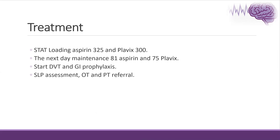The treatment, as mentioned, in case of minor stroke or transient ischemic attack, we give loading aspirin and Plavix, maintaining both for three weeks or 21 days, then single antiplatelet according to the underlying etiology. If the underlying etiology is thromboembolic, we will start anticoagulation.